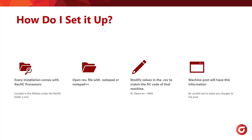How do you actually set it up? Every installation comes with Reverse NC processors, located in the SN data under the rev NC folder as a dot REV file. You'll open the rev file with Notepad or Notepad++. You can then modify the rev file to match the NC code of the machine — for example, flame on is M04. The machine post will have this information, but be careful not to make any changes to the post processor. You're only making changes to the dot REV file.